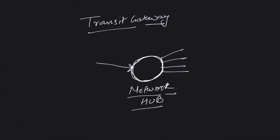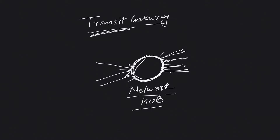Welcome back to the channel. In this video we're going to talk about Transit Gateway. As the name suggests, it's transitive in nature. Conceptually it's very simple — you can consider it as a network hub which you can use to interconnect multiple networks via Transit Gateway. We'll go through some theory first, then get into the AWS console and create one.